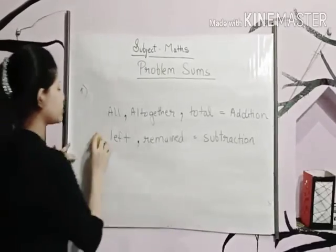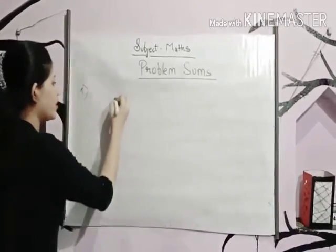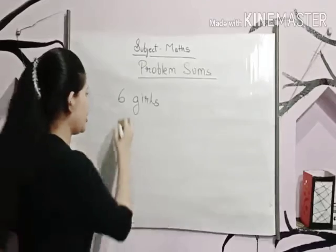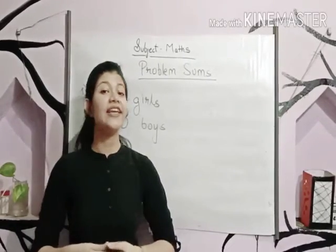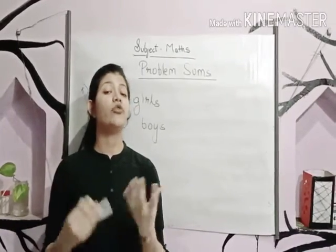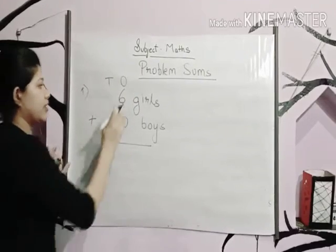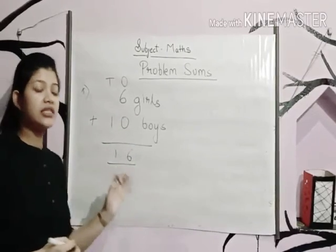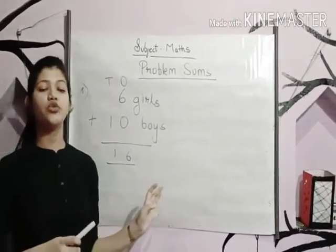Let's read question number one. Prakash invited six girls and ten boys to his birthday party. How many children did he invite to the party in all? The word 'all' tells us we have to do addition. So six plus ten — ones: six plus zero is six, and one is copied. Sixteen children Prakash has invited to his birthday party.